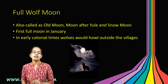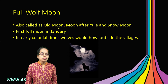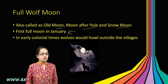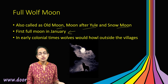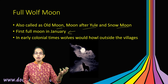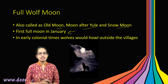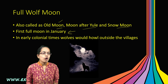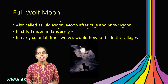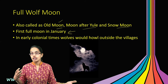The next is the full wolf moon, also known by different names: old moon, moon after yule, or snow moon. It is the first full moon visible in the month of January. In primitive times, it was believed that wolves would howl outside villages during a full wolf moon. So the other names — old moon, snow moon, and moon after yule — are all very important to remember.